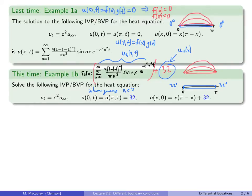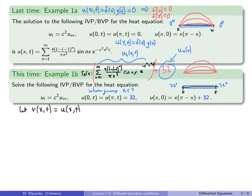We would get stuck trying this approach. Looking back at the solution, it is not a sum of functions of x times functions of t, because we have that constant 32 outside. So instead, I'm going to make a substitution: let v(x, t) = u - 32. We're just pretending 32 is 0 — we did something similar in the first series of lectures when we defined y = T - 72 for a cup of coffee in a 72-degree room.